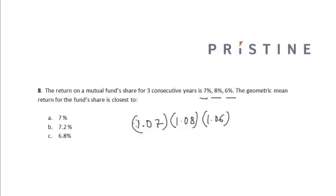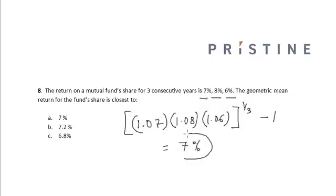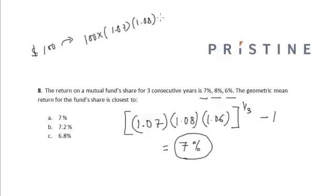The geometric mean return will be given by the product of the returns for the three years raised to the power of 1/3, minus 1. If the security is worth $100, then it will reach a value of 100 × 1.07 × 1.08 × 1.06 after three years. Let the geometric mean return be G.